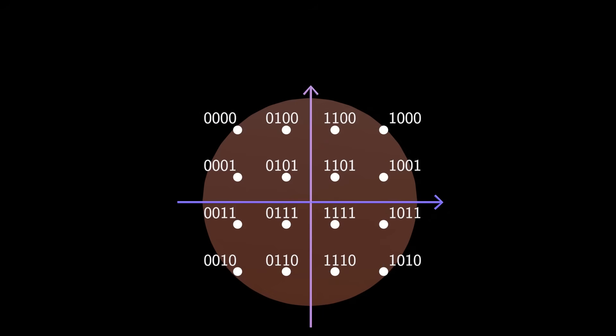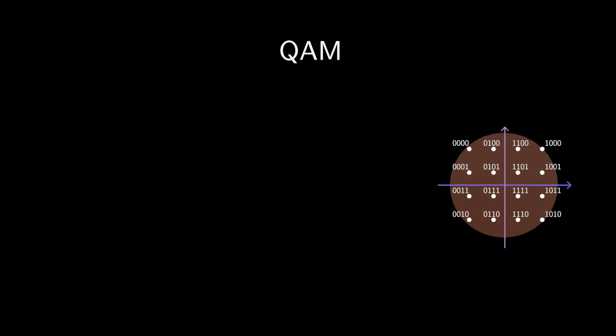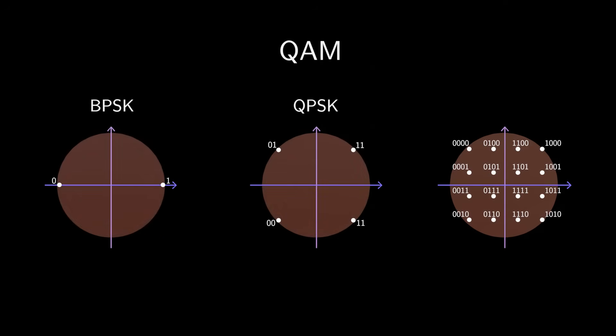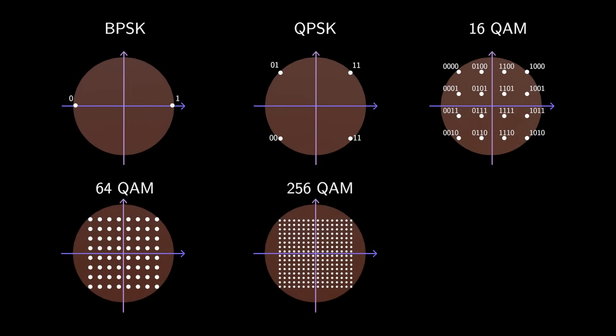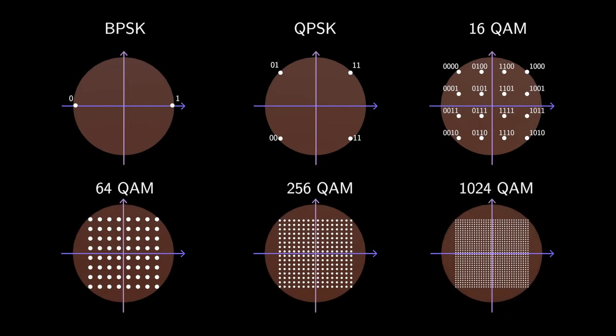All these modulation types fall under QAM modulation. If we send only two signals, it's called BPSK, four signals make it QPSK, 16 signals give you 16 QAM, and so on. In 5G, we even use 64 QAM, 256 QAM, and 1024 QAM.